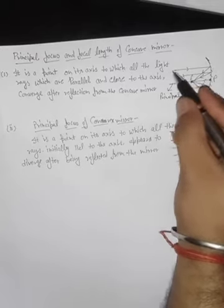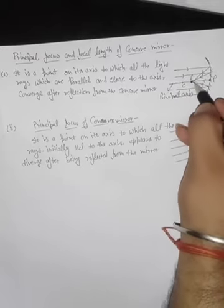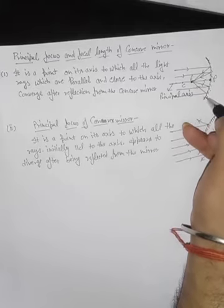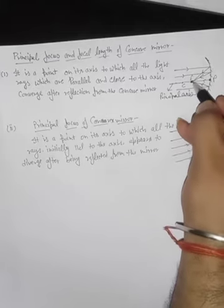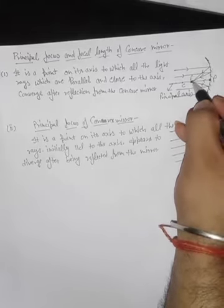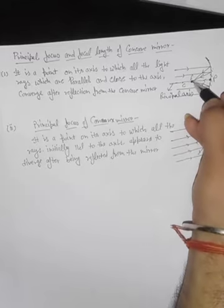The lines are parallel to the principal axis, and after the mirror, the point where they converge and become visible is called the principal focus.